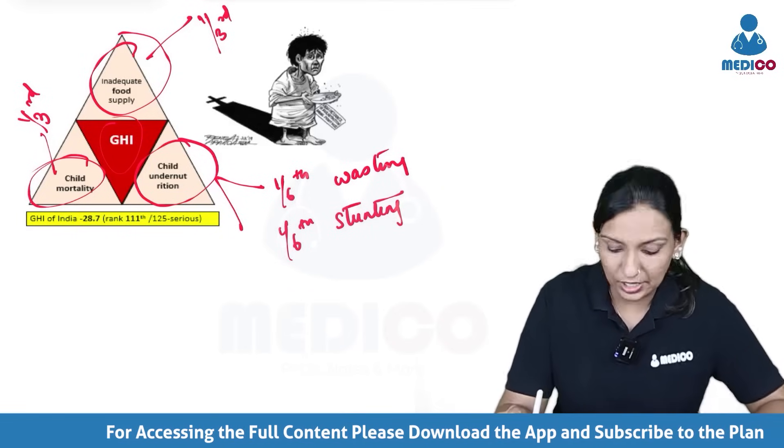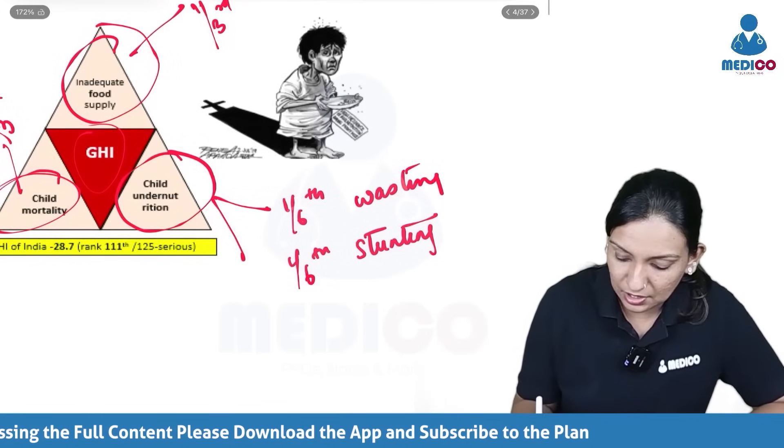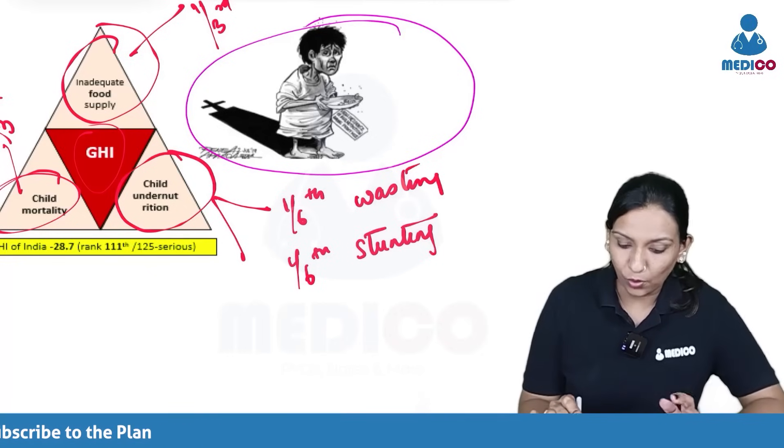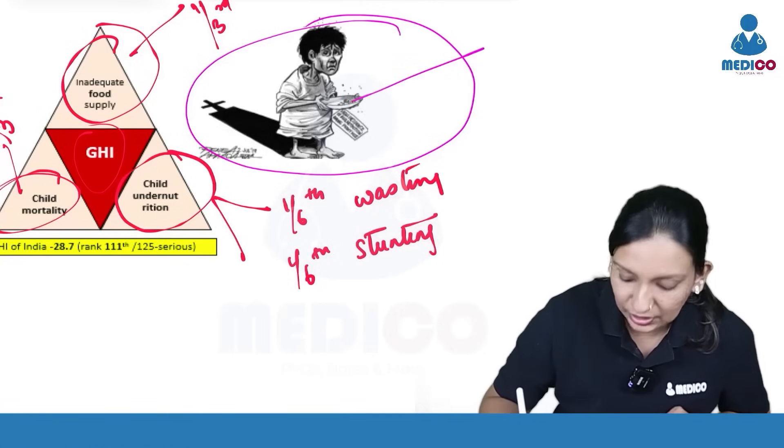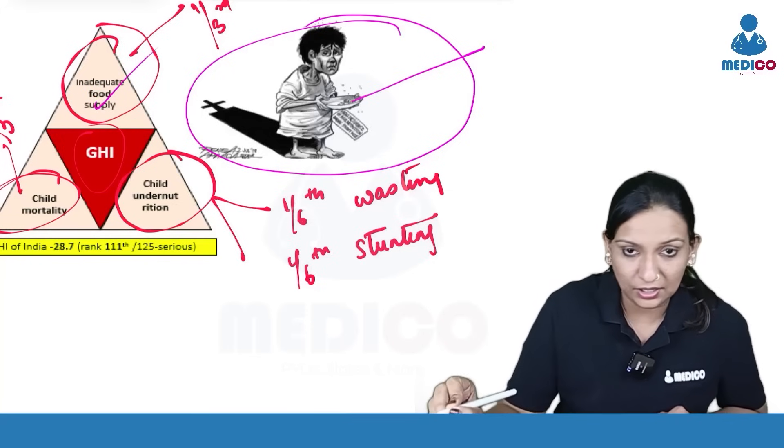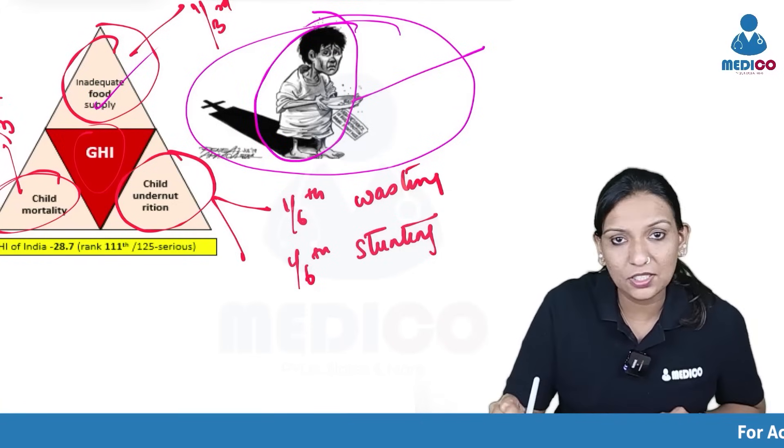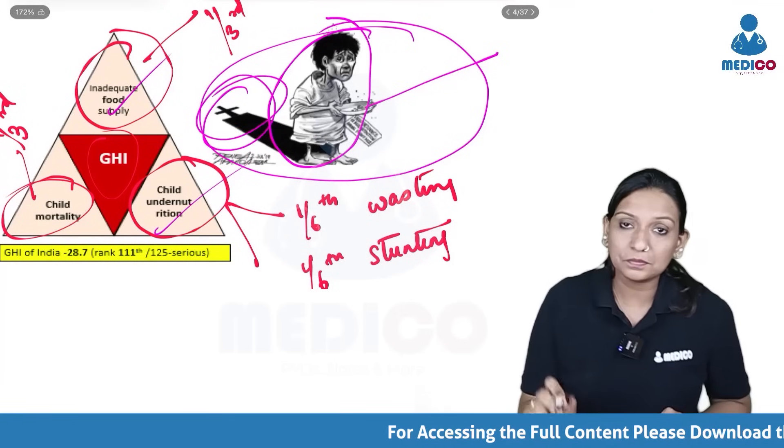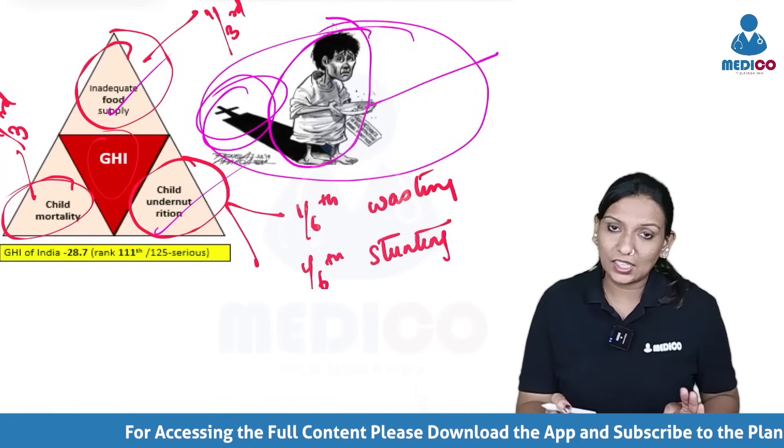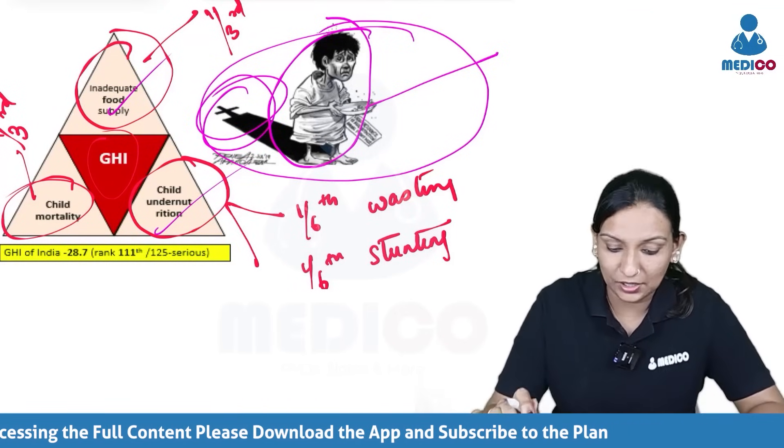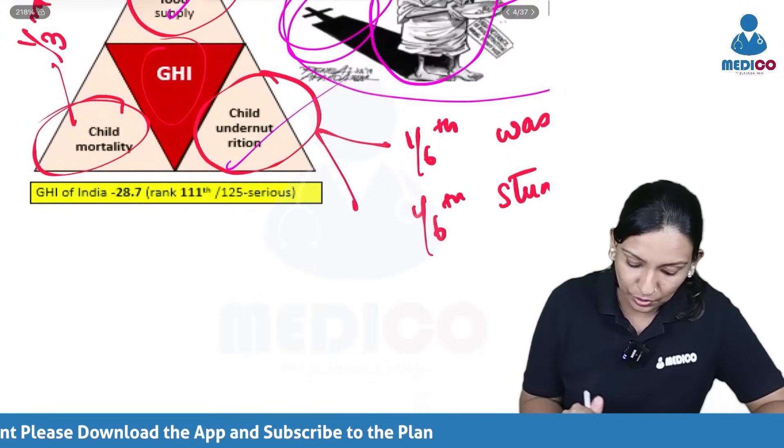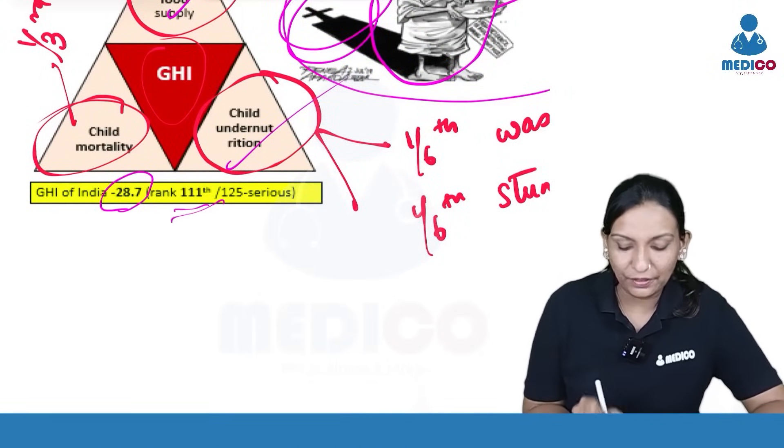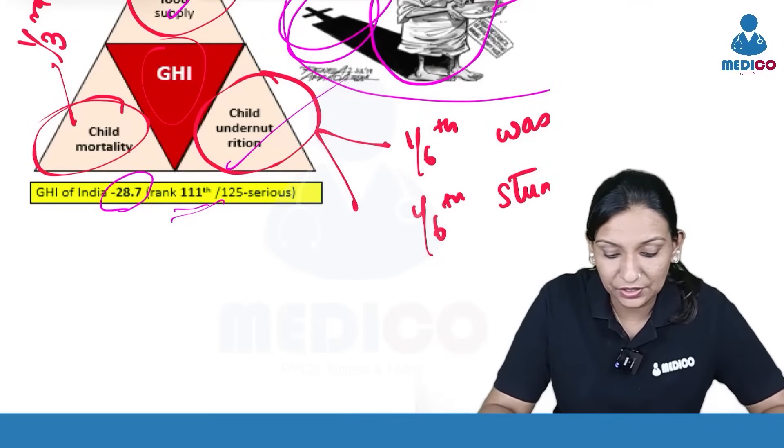So how to remember the components of the GHI? Just remember this image, this particular child. The child is having inadequate food supply. So that is one. Then the child is looking very much undernourished or malnourished. So that is the second one. And there is mortality behind him or mortality is following him. The latest value is India GHI is 28.7. We are at a very bad rank of 111 out of 125 countries.